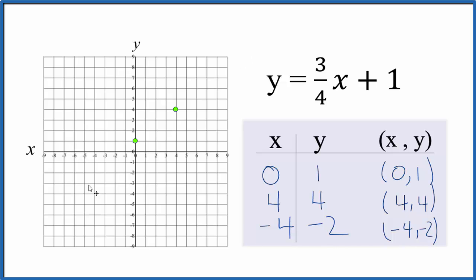And we could stop there and draw our line, but having that extra point, that makes sure that you've done these two correctly. So how about negative four for x and negative two for y? And we see they all fall on this line here. So let's put a line through this, and this is the graph for y equals three-fourths x plus one.